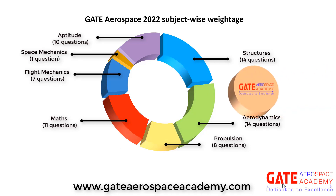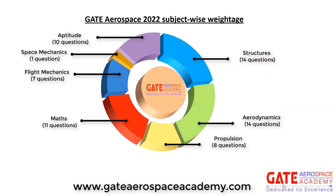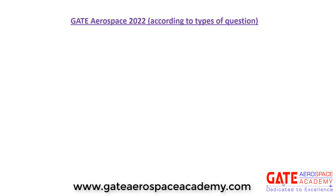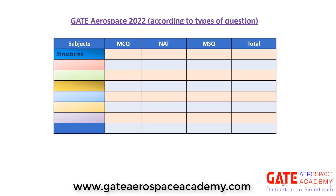Now let's see the distribution according to the types of questions: MCQ, MSQ, and NAT. In structures, total 4 MCQ were there, 8 NAT and 2 MSQ questions were asked. So the total number of questions in structures were 14.